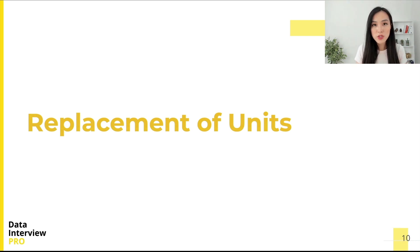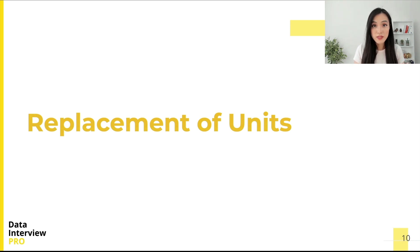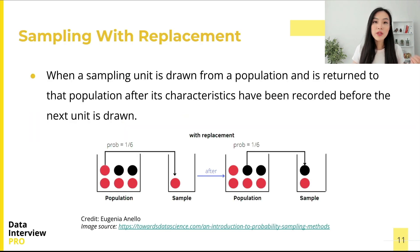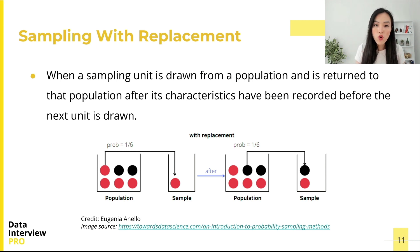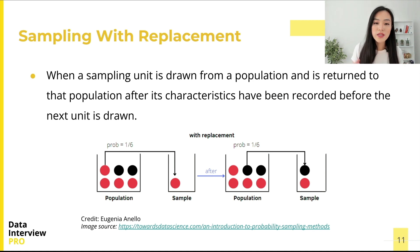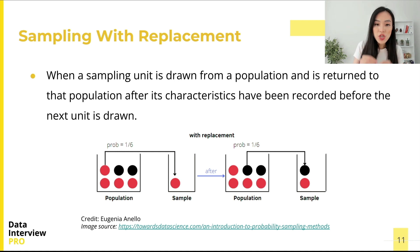Before diving into different sampling methods, let's observe that we can sample from the population either with or without replacement. For sampling with replacement, it is when a sampling unit is drawn from a population and is returned to that population after its characteristics have been recorded, before the next unit is drawn. Using the tweet example, when we sample with replacement, each time we select a tweet we look at its content, record it, and then return it to the pool before selecting another tweet.